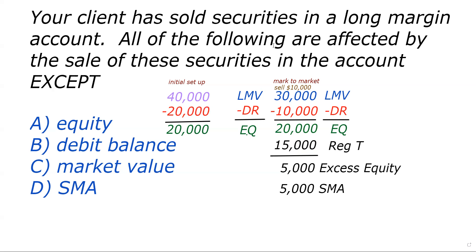As a test taker, don't overdose on margin. You could think of excess equity and SMA as one and the same — we're not actually, but I don't think that would cause you to miss anything on the test. With $5,000 in SMA, two times that is your buying power. So in this question, the debit balance was changed, the market value was changed, and indeed SMA was created.